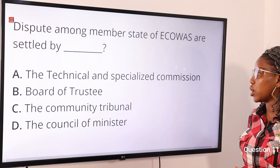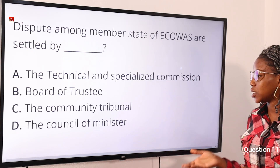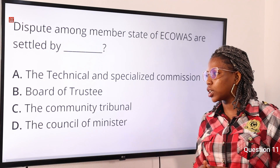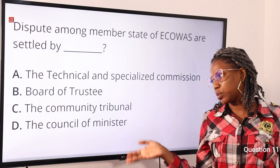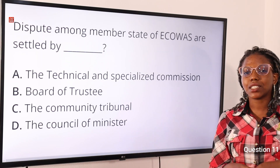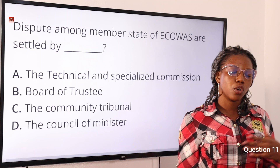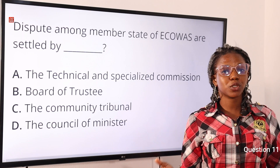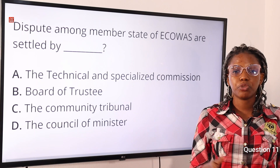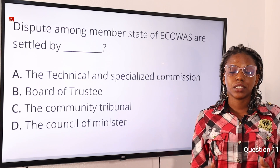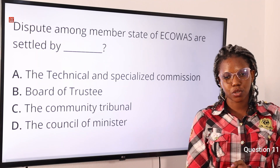Question eleven: disputes among member states of ECOWAS are settled by — option A: the technical and specialized commission, option B: board of trustees, option C: the community tribunal, option D: the council of ministers. The answer is option C, the community tribunal, also called the community court, which is composed of five independent judges appointed for a four-year tenure.